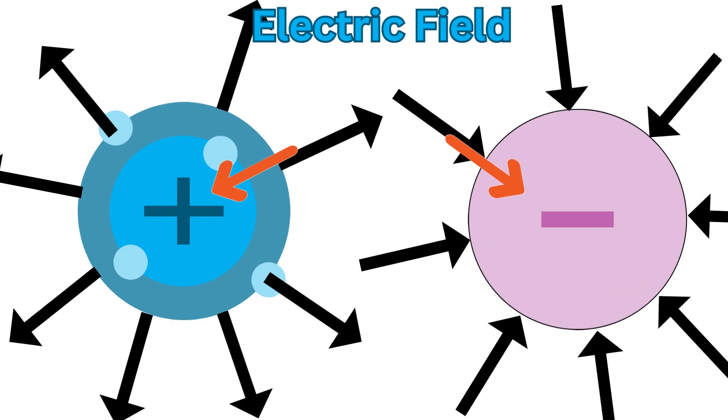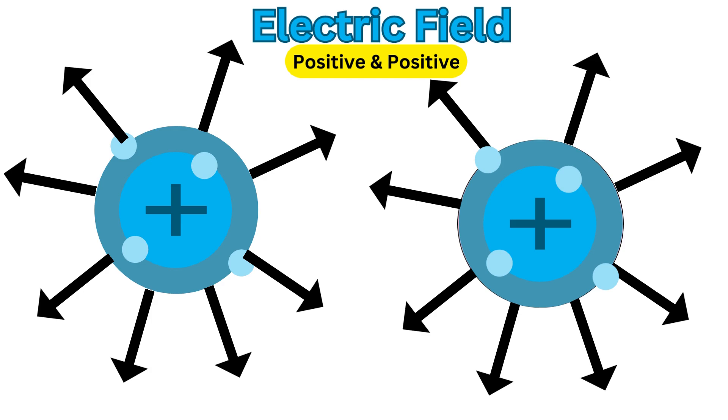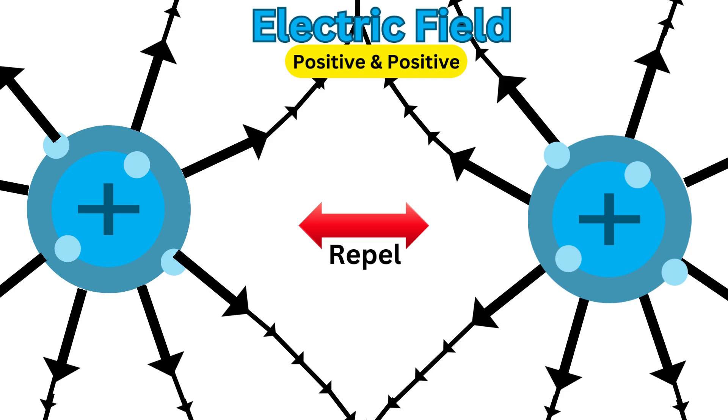The size and sign of the charged particles involved determine the electric field's strength and direction. A charged object in an electric field experiences a force as a result of the electric field's interaction with the object's charge.